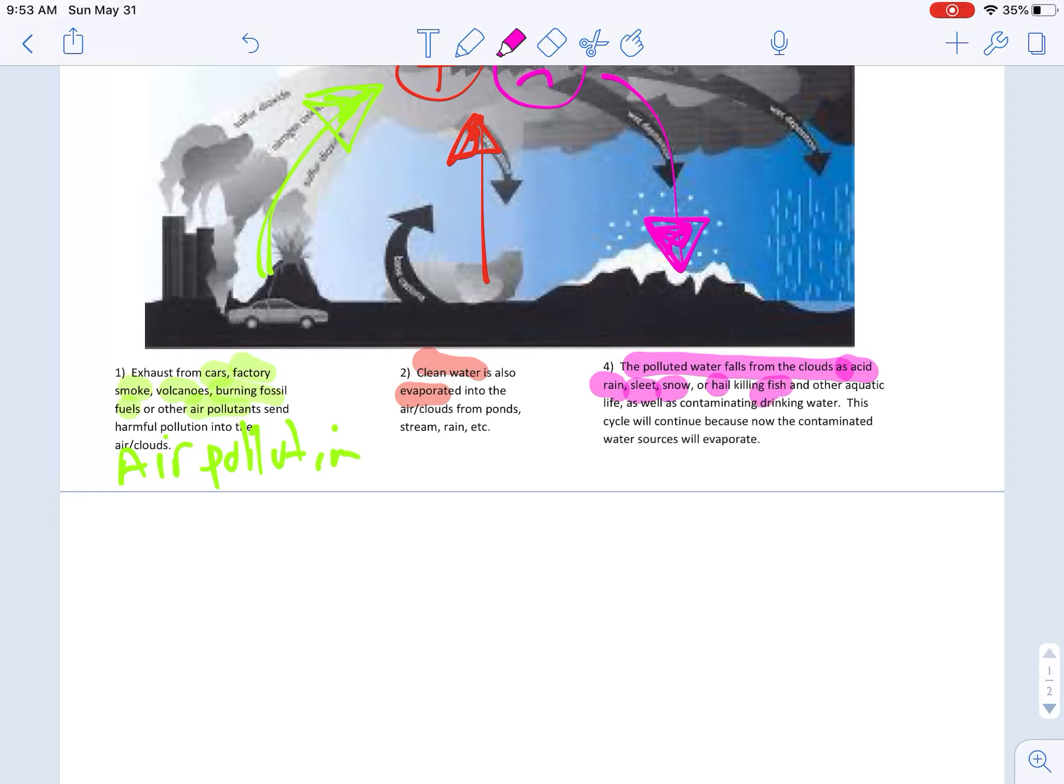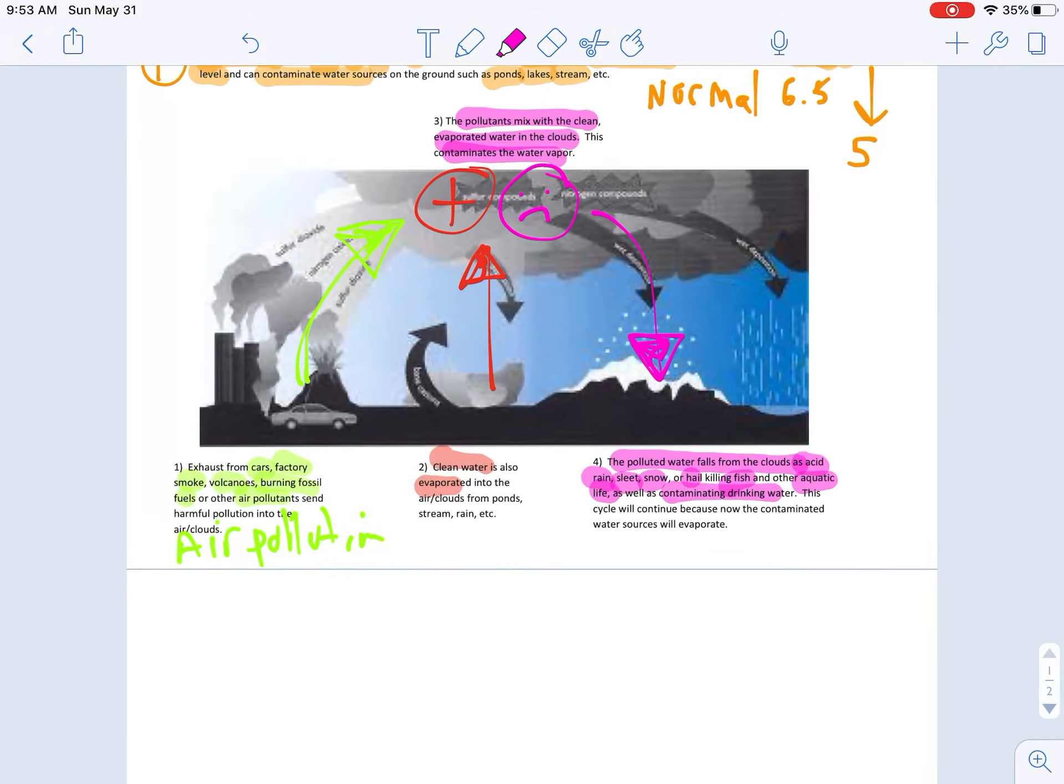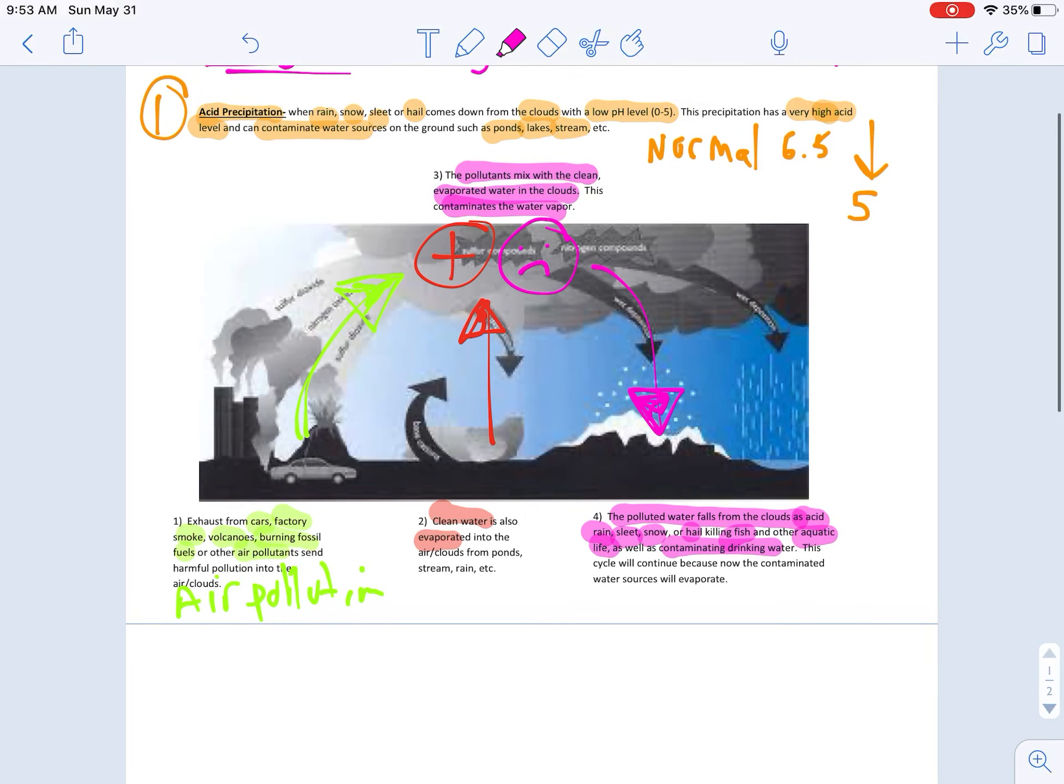It lands in oceans. It kills fish. It kills other aquatic life. It contaminates drinking water. And this begins the cycle. Now that the water cycle is contaminated, it just continues to go on a contaminated water cycle until we clean it up.